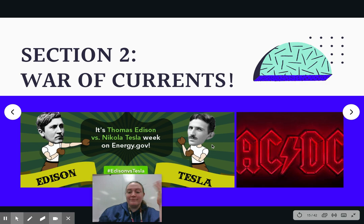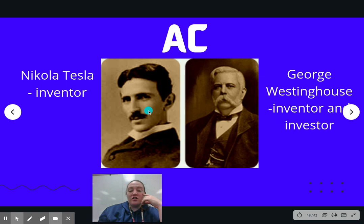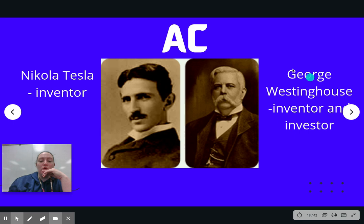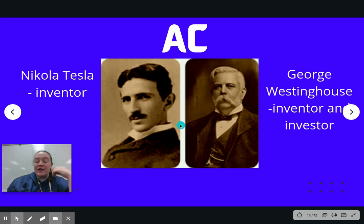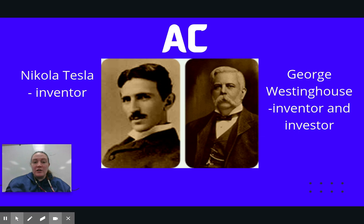On the AC side — the alternating current side — you have Nikola Tesla and George Westinghouse. George Westinghouse is a very famous inventor and also an investor — he's very rich. He puts all of his money and fame into Tesla's idea. Nikola Tesla is very young, he is foreign, and no one really knows who he is. He turns out to be one of the most intelligent people that come out of this era. That's the reason the Tesla cars are named after him — he did so many remarkable things. That's the AC side.